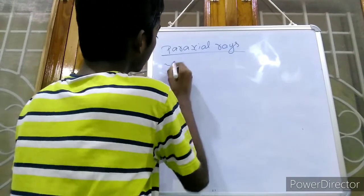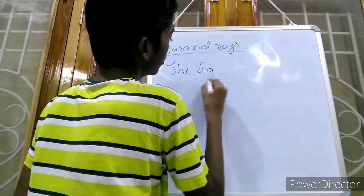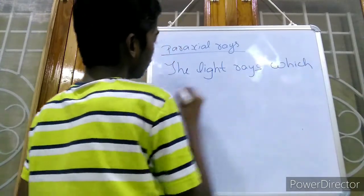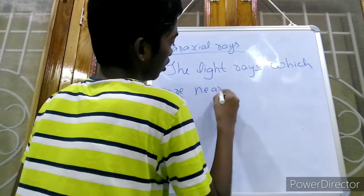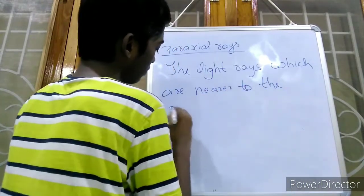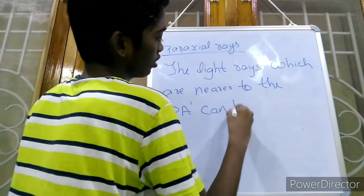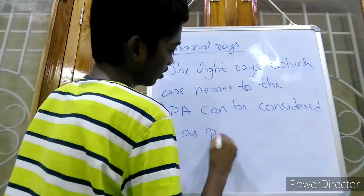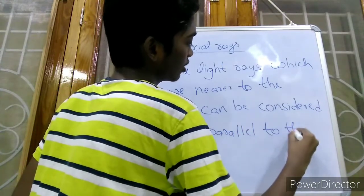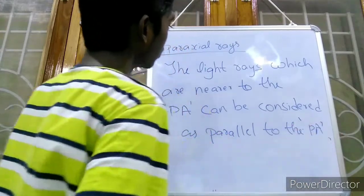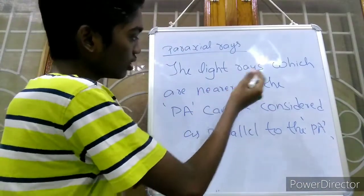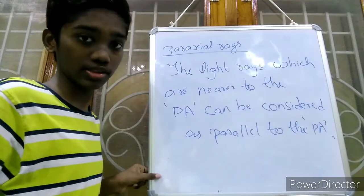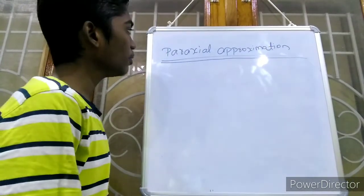Paraxial rays are nothing but light rays or incident rays which are nearer to the principal axis and can be considered as parallel to the principal axis. The light rays or incident rays which are very closer or very nearer to the principal axis can be considered as parallel to the principal axis — this is called paraxial rays.